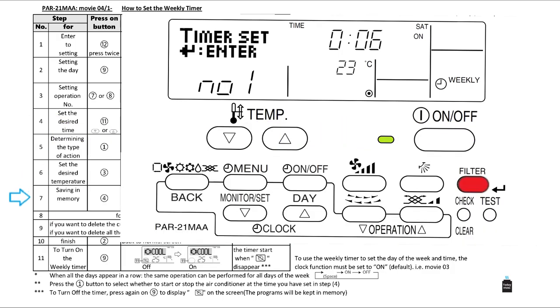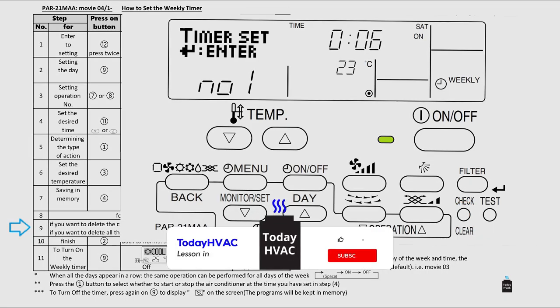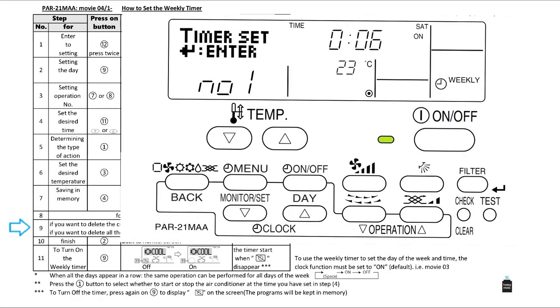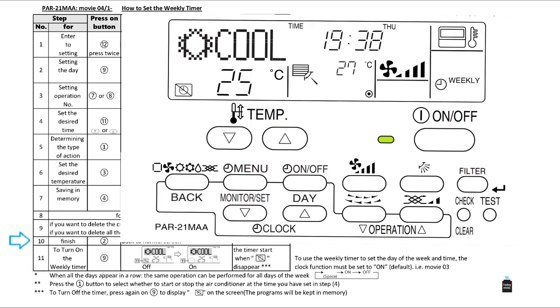Step seven: Press on filter to save the pattern. Step eight: For another setting, repeat step two till step seven. Step nine: If you want to delete the current pattern, press once on the check button. If you want to clear all the patterns, hold down the check button for two seconds or more. Step ten: When you finish, press on the mode button to return to normal screen.